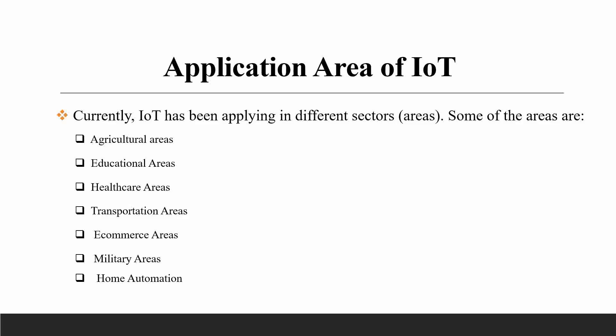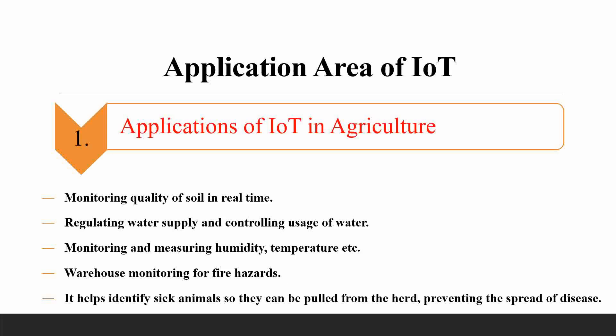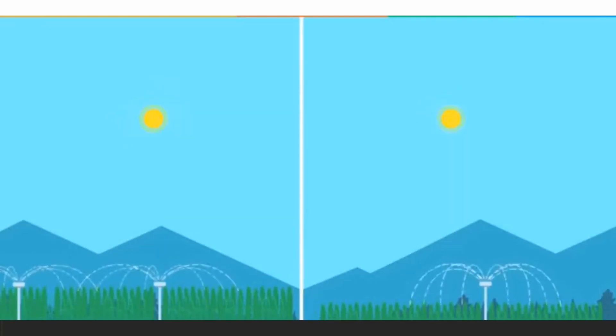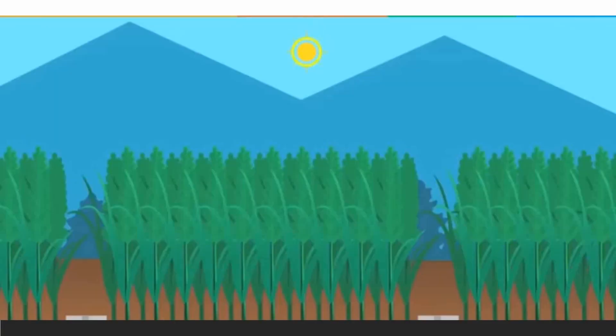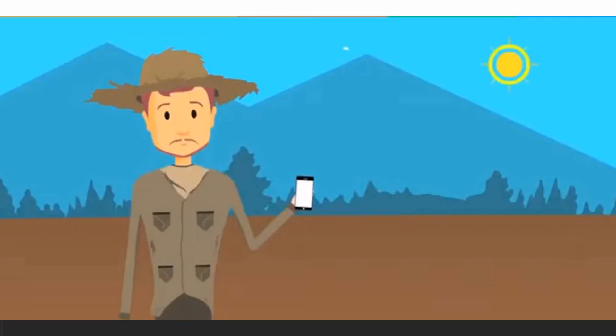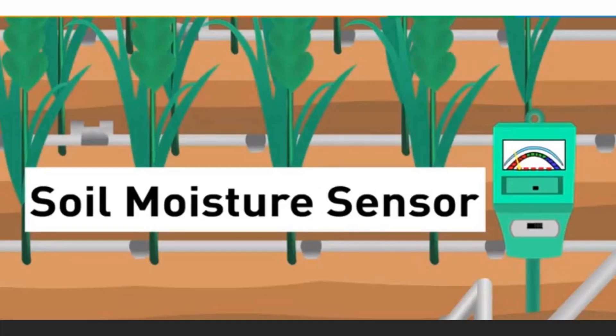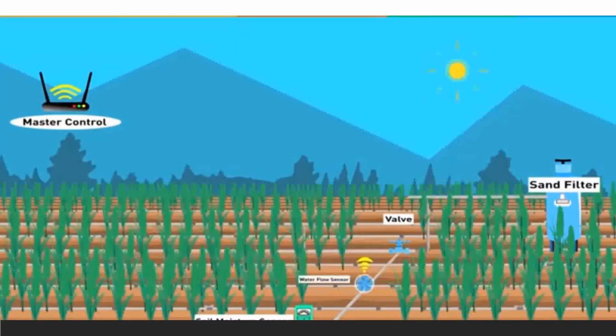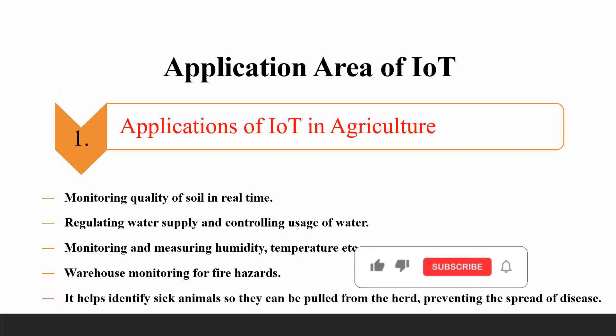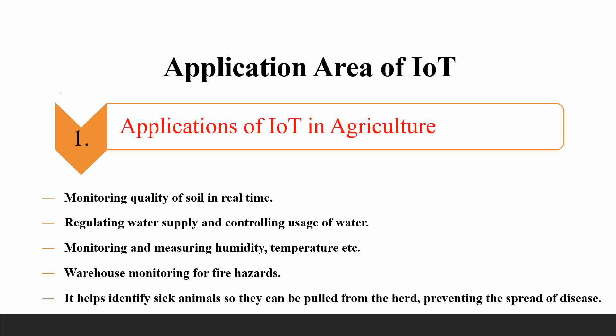The application of IoT in agriculture includes monitoring the quality of soil in real-time with the help of real-time data, so we can monitor and manage the quality of soils. We can also monitor and control the usage of water.